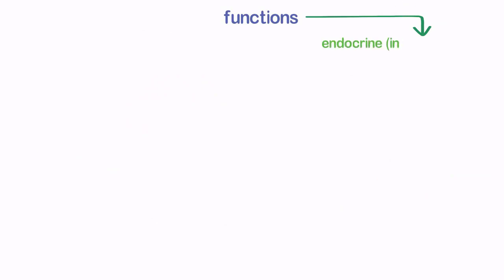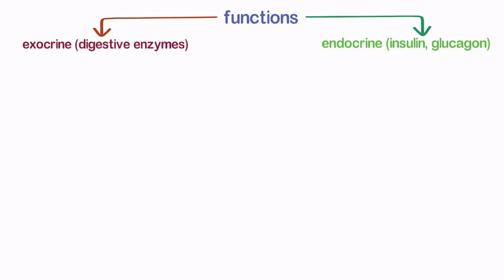The pancreas has both an endocrine — insulin, glucagon — and exocrine — digestive enzymes — function.